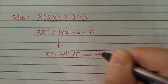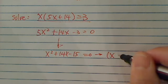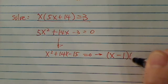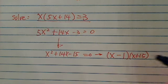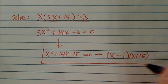And then from this one I would have x minus 1, x plus 15. And this is my dream box.